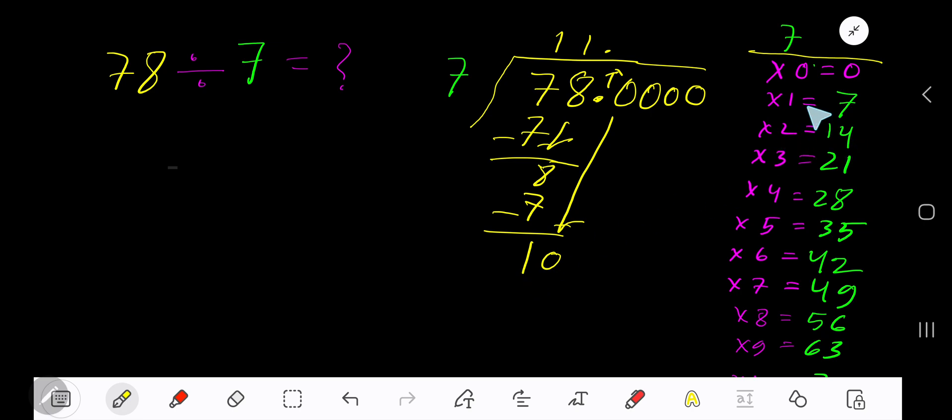2 times 7 is 14, which is greater, so 1 time. 1 times 7 is 7. Subtract: 3. Bring down another 0.